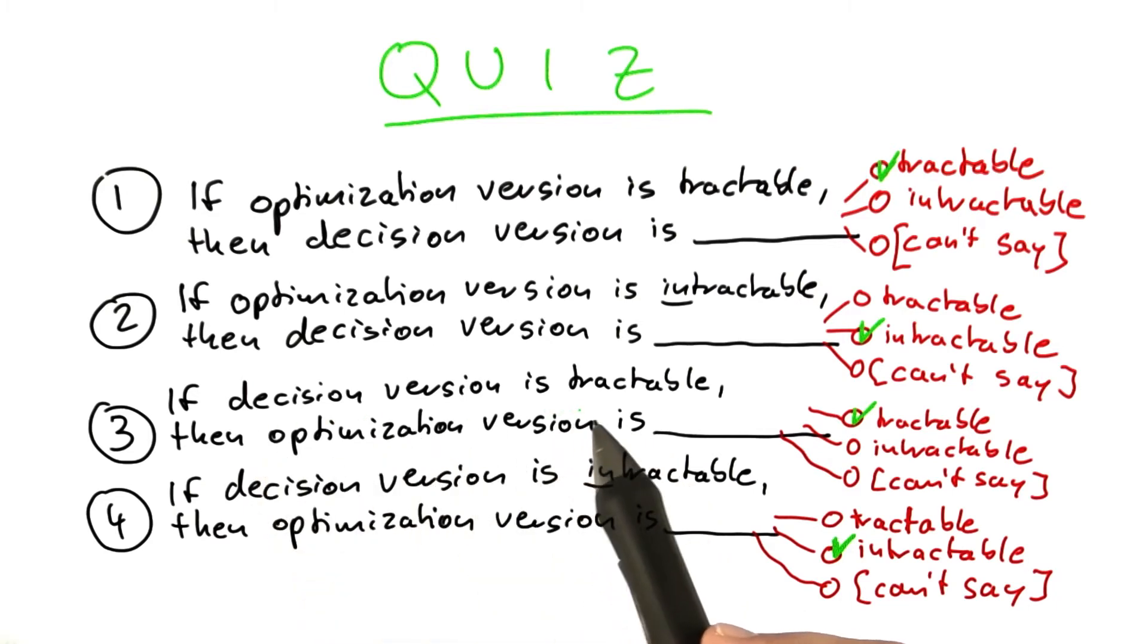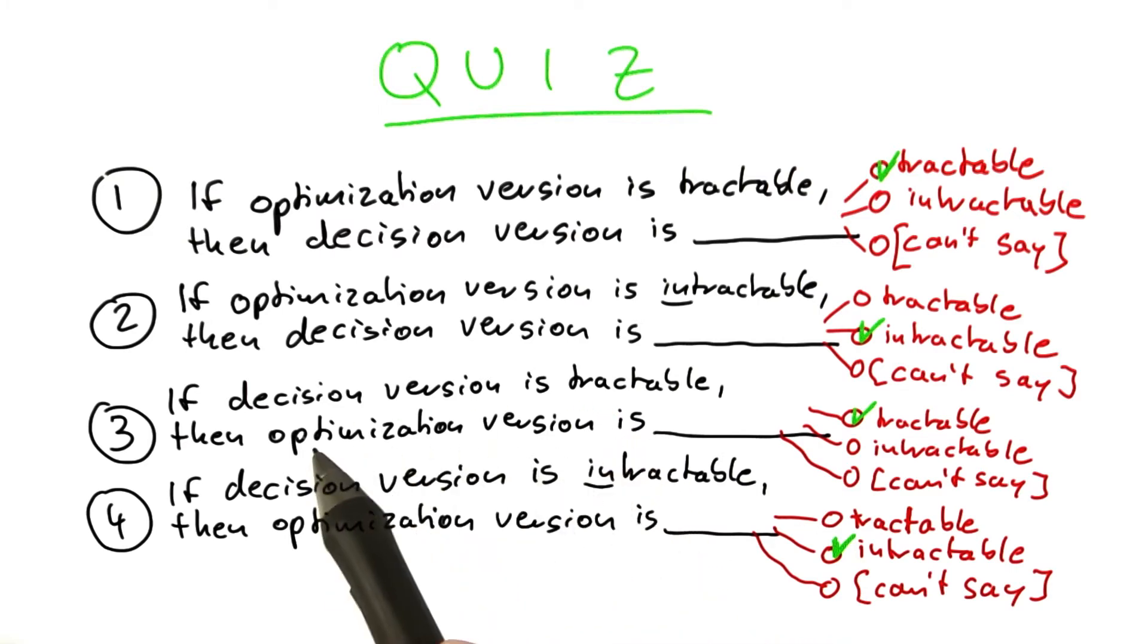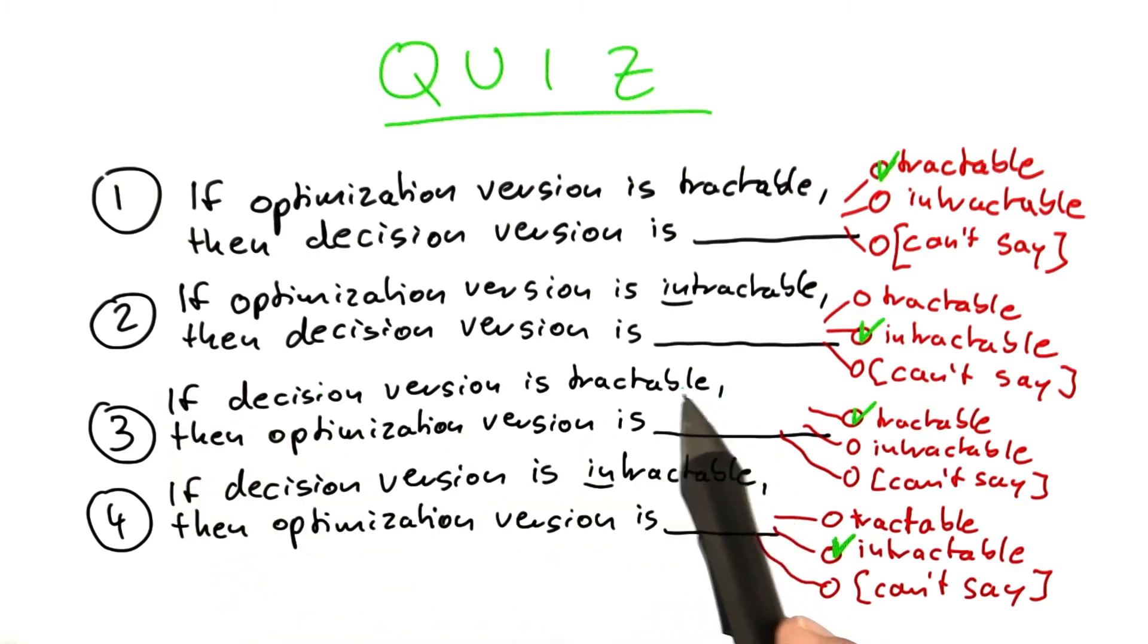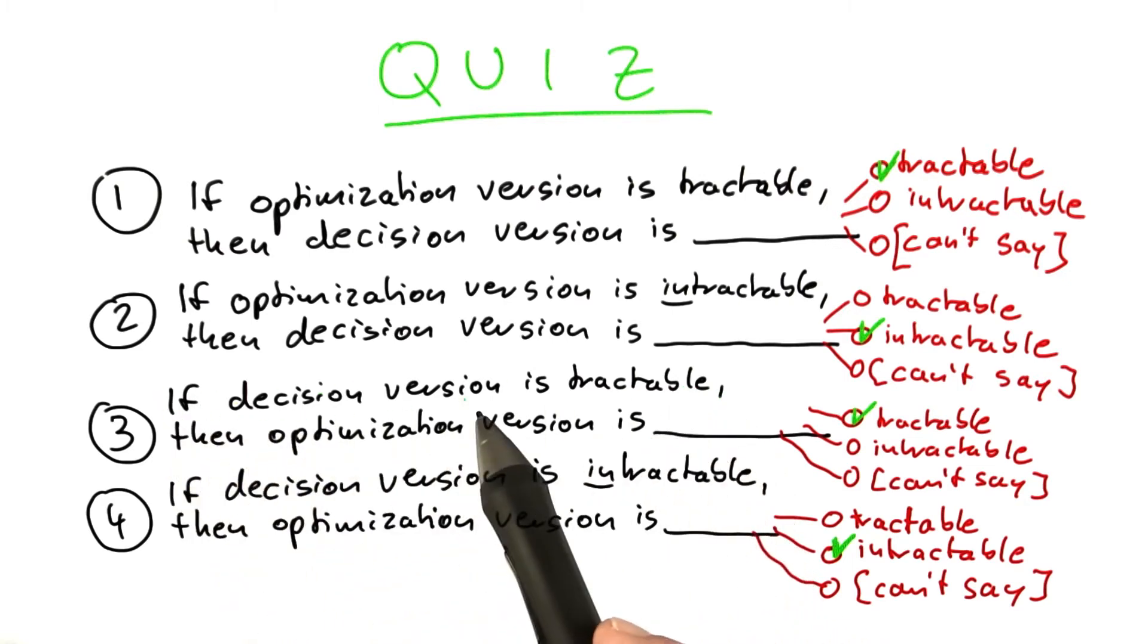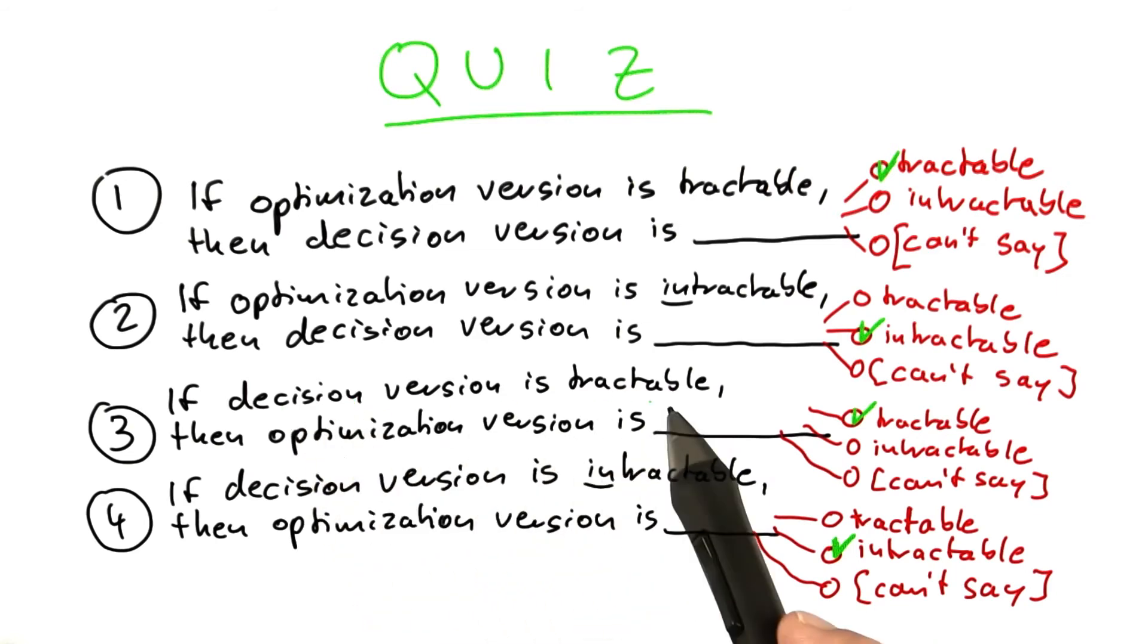One way to show this, and this is not very precise but just to give you an idea, is that if you have a tractable decision version, then you could ask multiple questions about the solution and still remain in polynomial time. For example, if you're looking for the best possible solution for vertex cover, you could first ask the decision version,